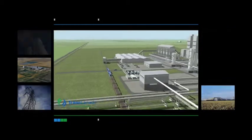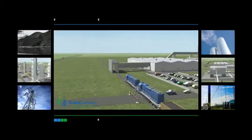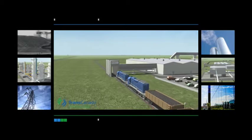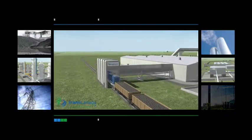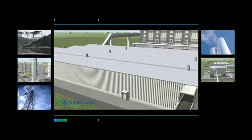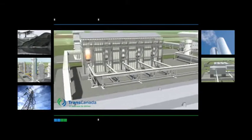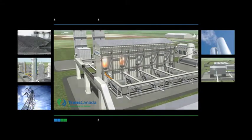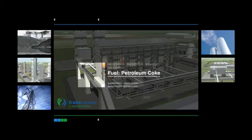Petroleum coke, an abundant by-product of the heavy oil upgrading process, will arrive at the site by rail from Alberta. The fuel is fed by conveyor to the gasifiers, where it will be heated to a high temperature under pressure, allowing it to be converted into a gas.